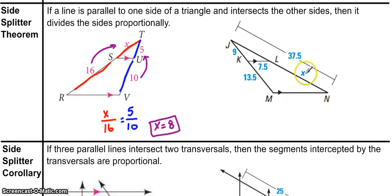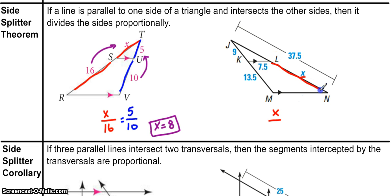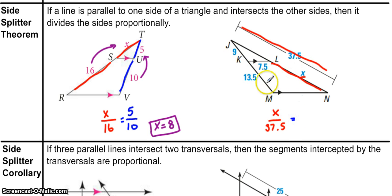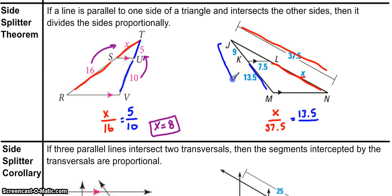Let's look at this next problem — I need to find X. There's nothing labeled from J to L for it to correspond to directly, but I know J to N is 37.5. So I'll use X over 37.5 as my first ratio. The side-splitter theorem allows this as long as I use corresponding parts on the other side. X corresponds to 13.5. I can't use 9 alone since I used the whole length 37.5 — I need the full corresponding side, which is 9 plus 13.5 equals 22.5. So the ratio is X over 37.5 equals 13.5 over 22.5.